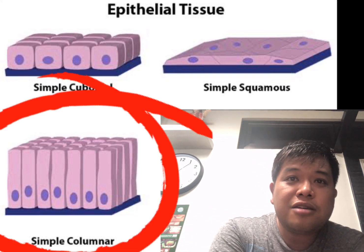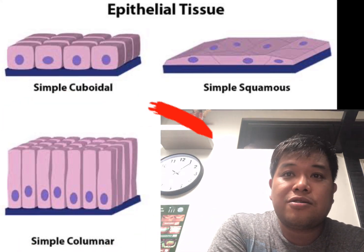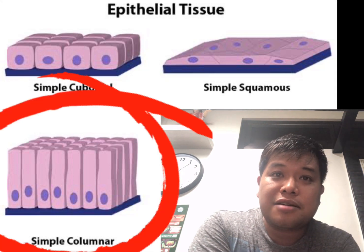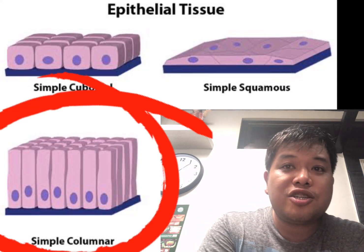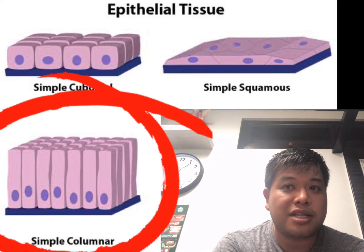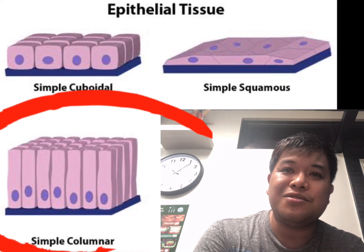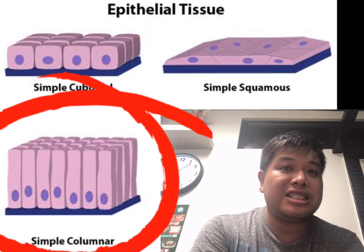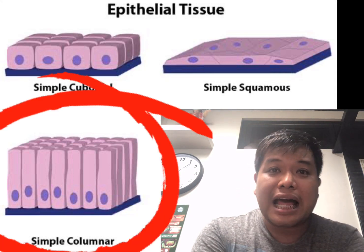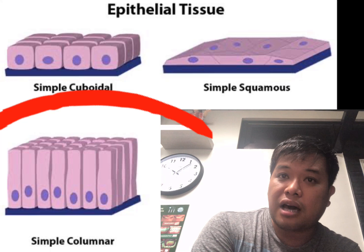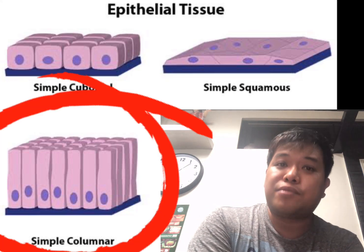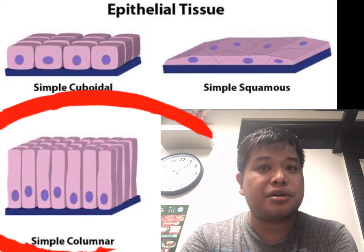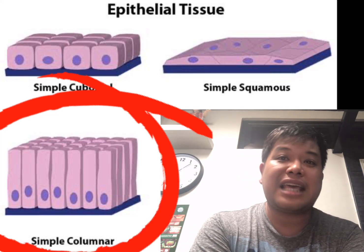The columnar cell is narrow and taller. They look like a column — long and rectangular in shape with an oblong or elongated nucleus. Columnar cells can be found in digestive tubes, gallbladder, excretory ducts, some glands, bronchi, uterine tubes, uterus, nose, ears, and tongue.